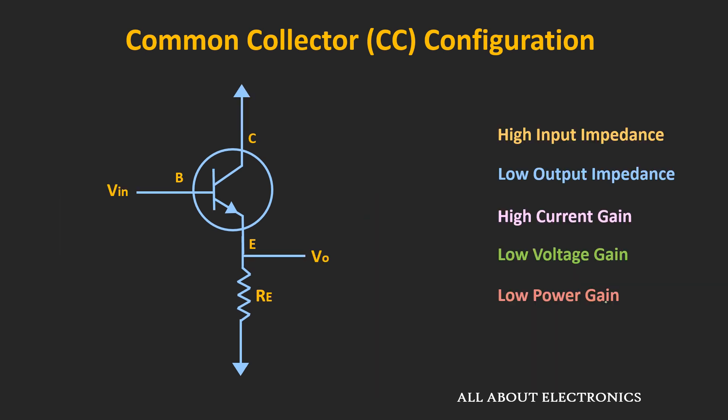The common collector configuration provides very high input impedance and very low output impedance, which is why it is often used for impedance matching in amplifier circuits. It provides very high current gain (equal to β + 1) and a voltage gain close to unity. The power gain of this configuration is low. These are the basic properties of the common collector configuration.